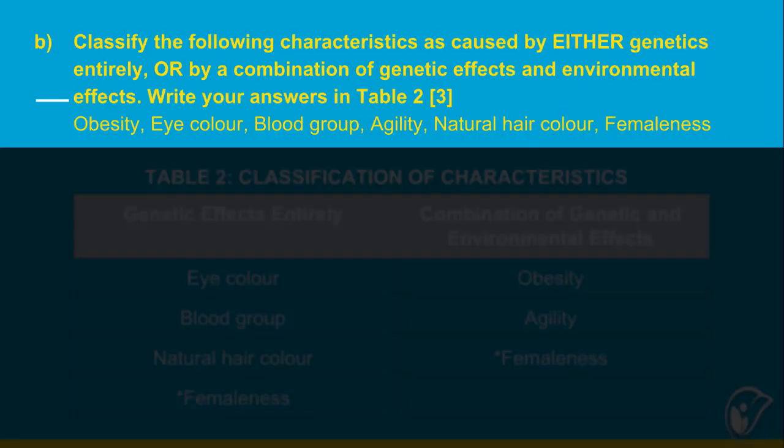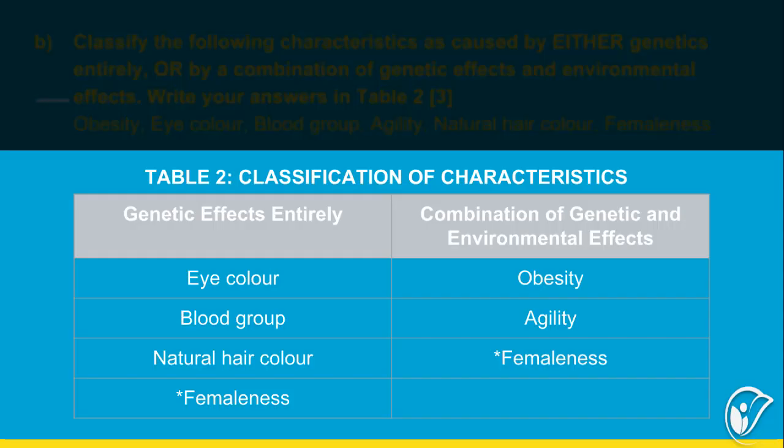And now for Part B. Here we are being asked to classify characteristics as listed below, caused by either genetics or by a combination of genetics and environment, and list them in Table 2. For genetic effects entirely, I have listed eye color, blood group, and natural hair color. The last one, femaleness, could be either, depending on what they really meant by that word.